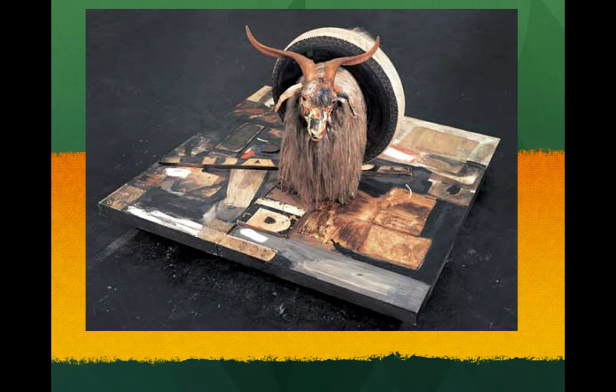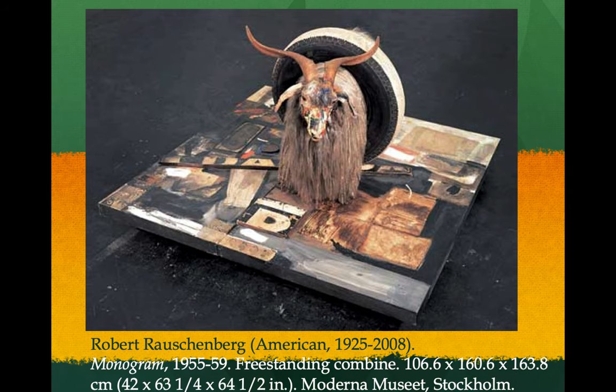What about this — it's a goat inside a tire, sitting on top of a canvas with some other junk on top of it. Is this art? Apparently it is — it's by Robert Rauschenberg. You would call this a sculpture. We'll talk about found objects art in a moment.